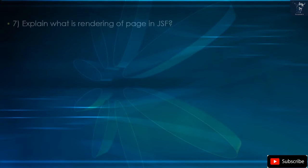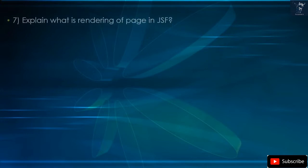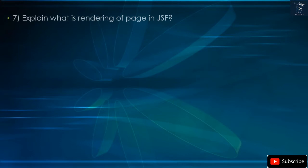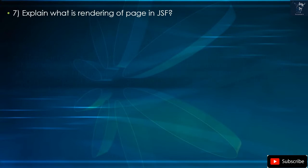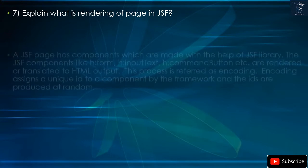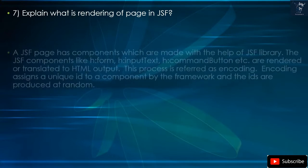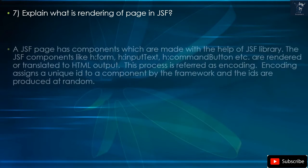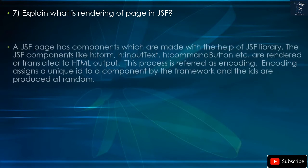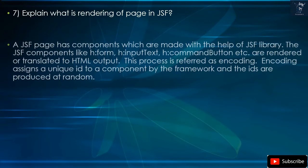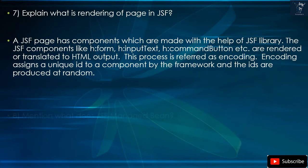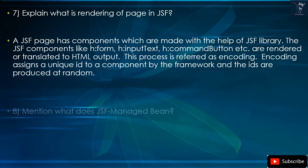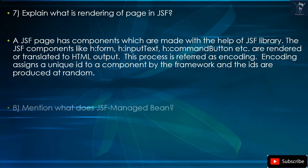Question 7: Explain what is rendering of a page in JSF. A JSF page has components made with the help of the JSF library. JSF components like h:form, h:inputText, h:commandButton etc. are rendered or translated to HTML output. This process is referred to as encoding. Encoding assigns a unique ID to a component by the framework, and the IDs are produced at random.